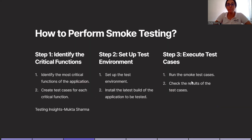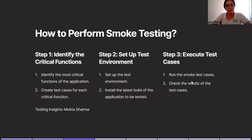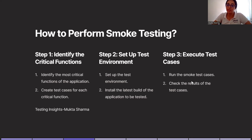What is the process of performing smoke testing? Step number one, identify the critical functions. First of all, you will identify the most critical functions in the application and create test cases for each critical function. Step number two, set up test environment. It will be set up by your test manager or the test lead. Then you will install the latest build of the application, which will be supplied by the development team.